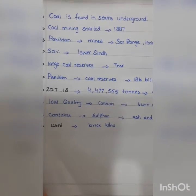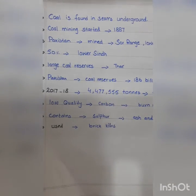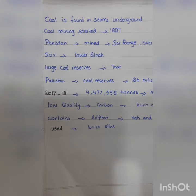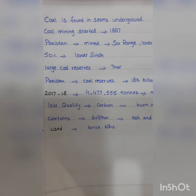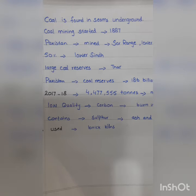The next important natural resource is coal. Coal is found in seams underground. Coal mining was started in 1887 in Pakistan, in Soar Range and in Lower Sindh. Fifty percent of Pakistan's coal comes from Lower Sindh. In the Thar area of Pakistan, large coal reserves have been discovered.